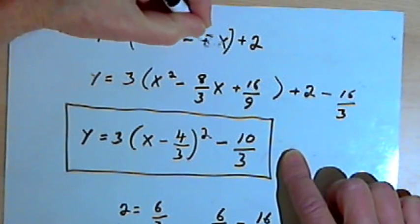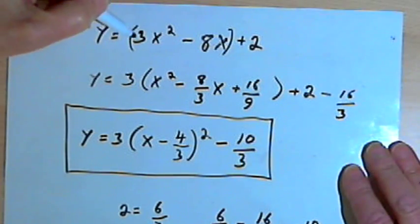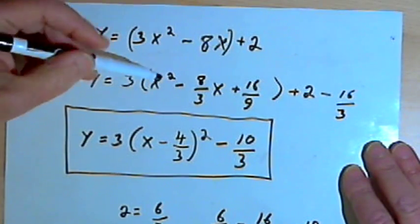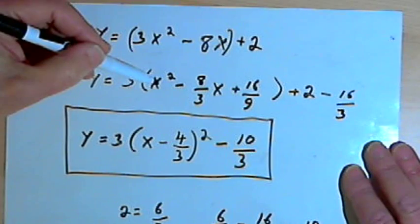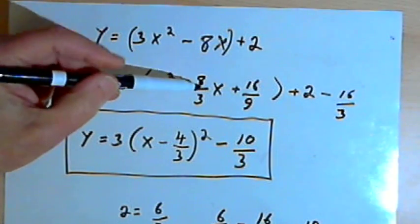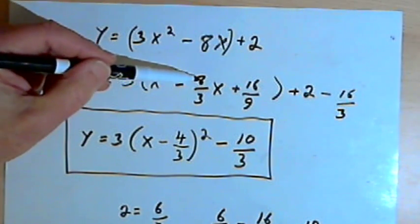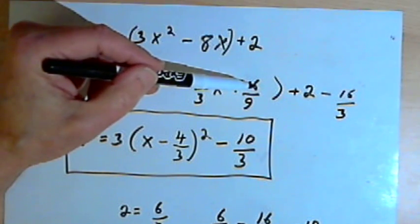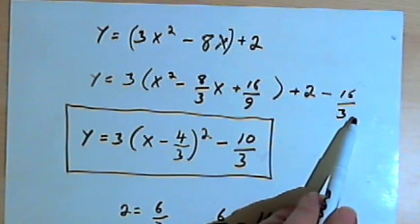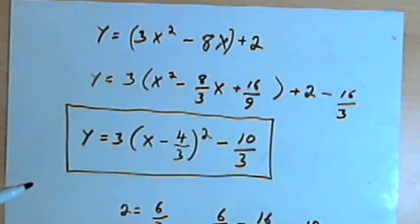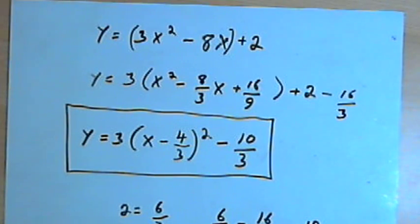So just to repeat this one time: the basic approach is you take your first two terms, put them in parentheses, factor them so that the coefficient for the first term is just 1. Then we complete the square inside the parentheses by dividing that second term in half and squaring it. We add that amount, then balance our equation again, clean everything up, and end up with the vertex form. So practice this a few times — it's not that hard once you get the hang of it, but it does require practice. Take care, I'll see you next time.